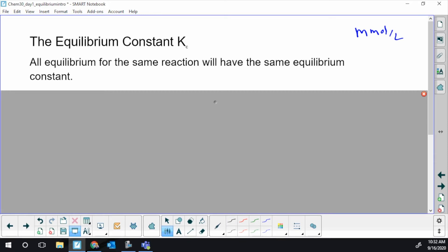Kc - this little c is the generic subscript - all equilibrium for the same reaction will have this same value at a given temperature. You should know reactions are temperature dependent. That's why we cook food - you heat it up to make it go faster.